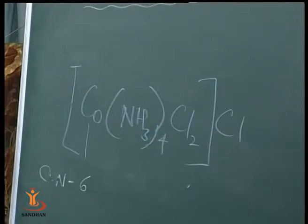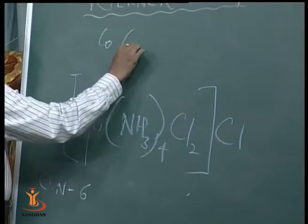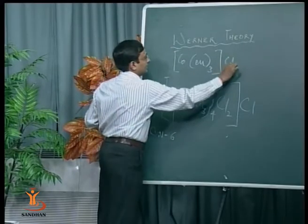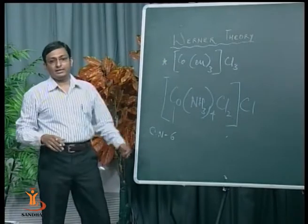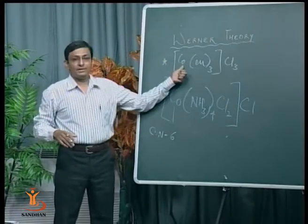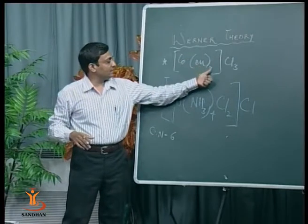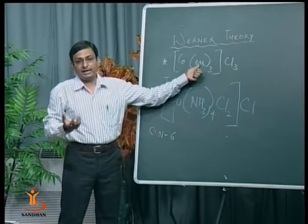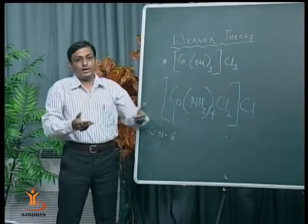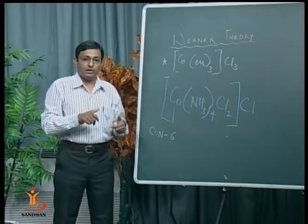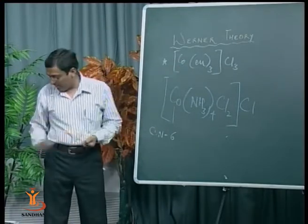Coordination number means the number of coordinate covalent bonds surrounding the central ion — not simply the number of ligands. For example, if we have ethylenediamine (EN) linked with cobalt, the coordination number is still six because EN is a bidentate ligand — each EN ligand forms two coordinate covalent bonds with the metal ion.